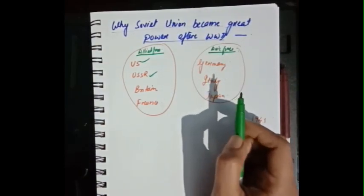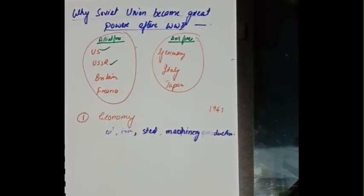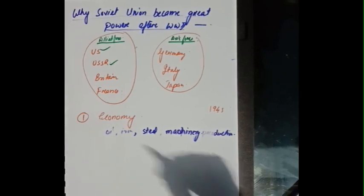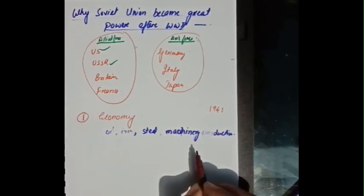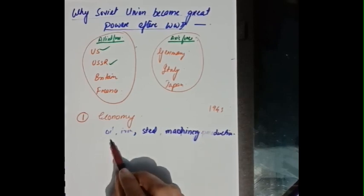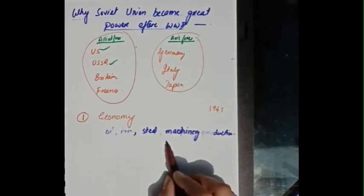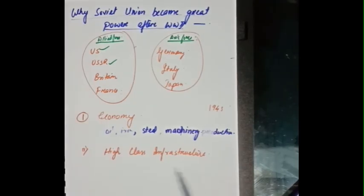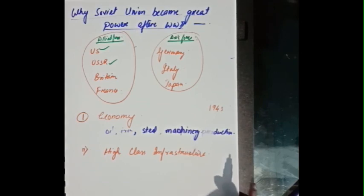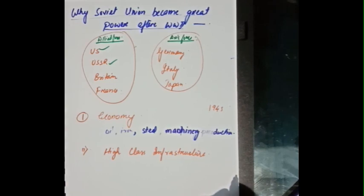Now we'll discuss why the Soviet Union became a superpower after World War II. The economy of the Soviet Union was so developed that they had very vast energy resources including oil, iron, steel, and machinery production.